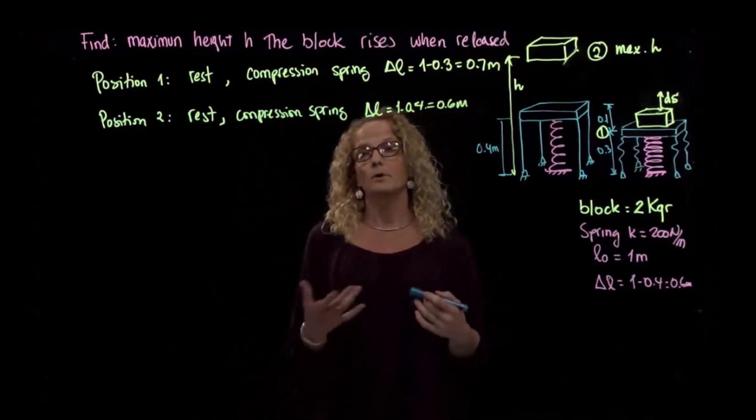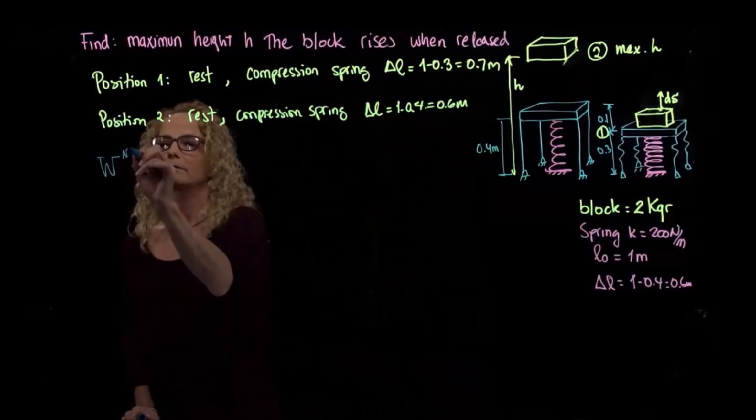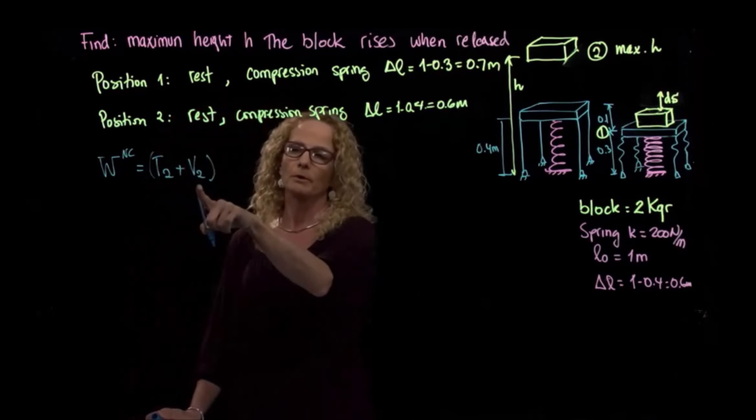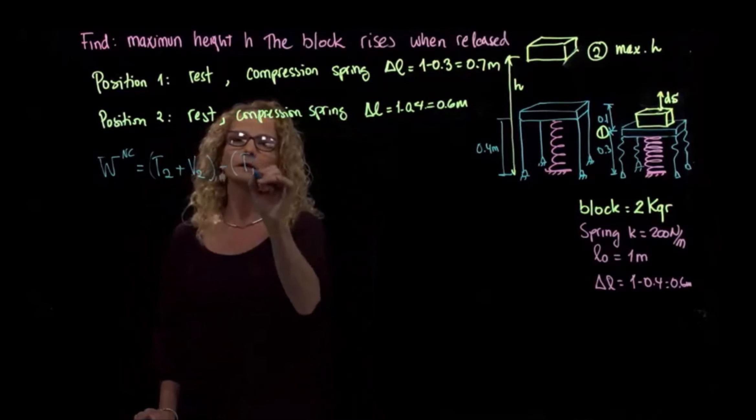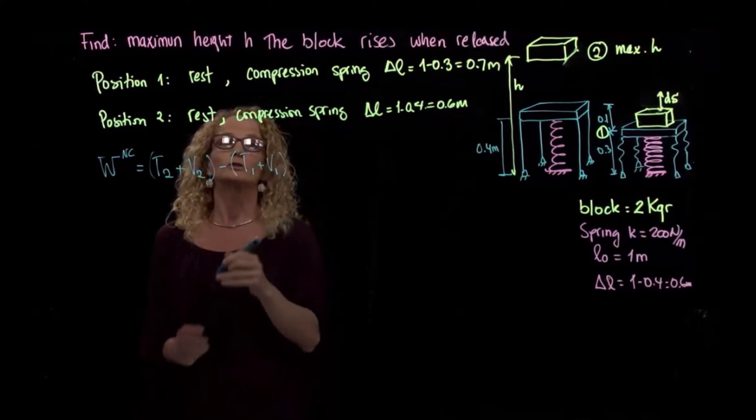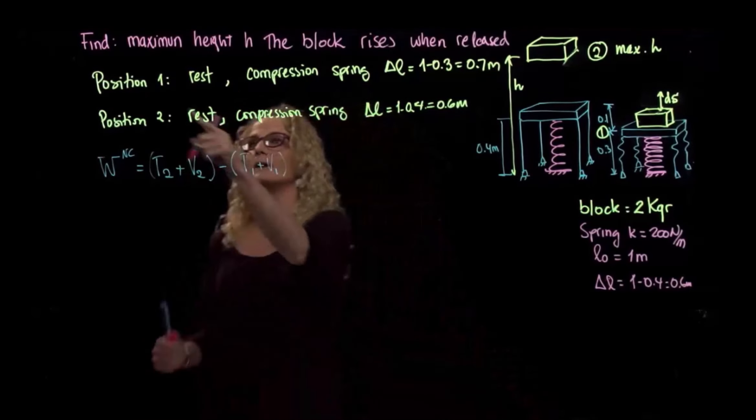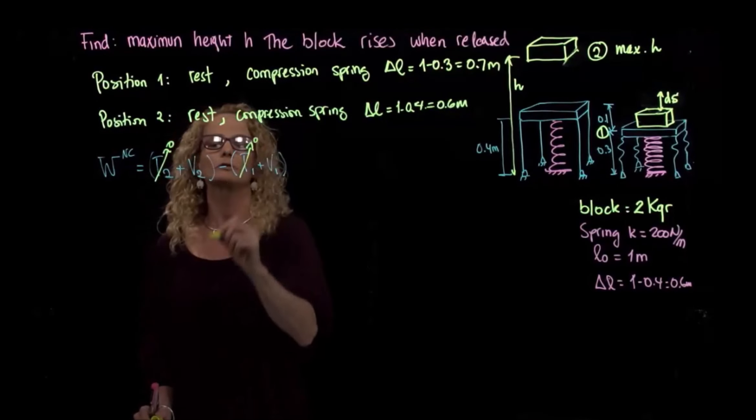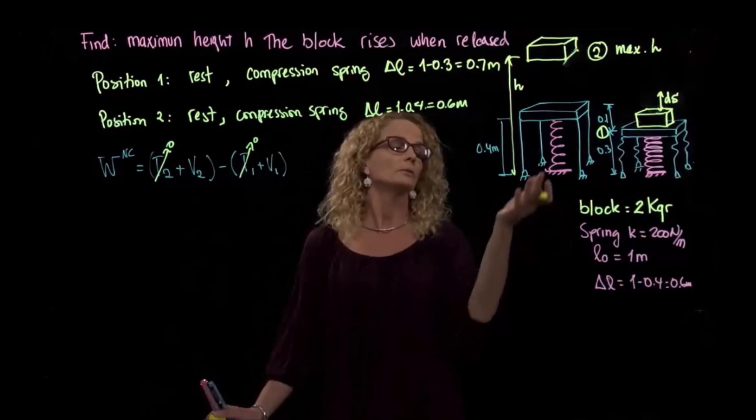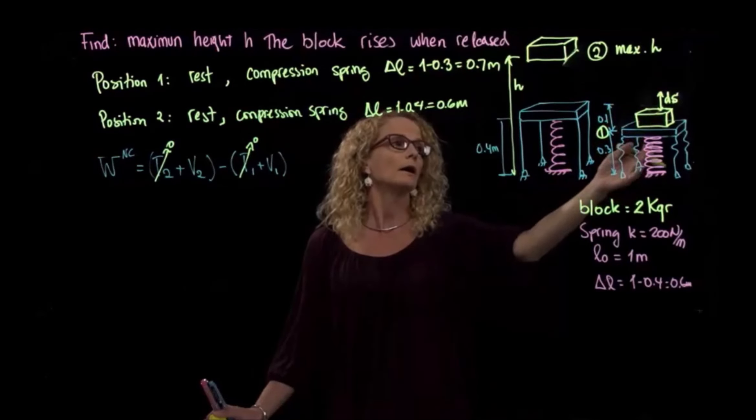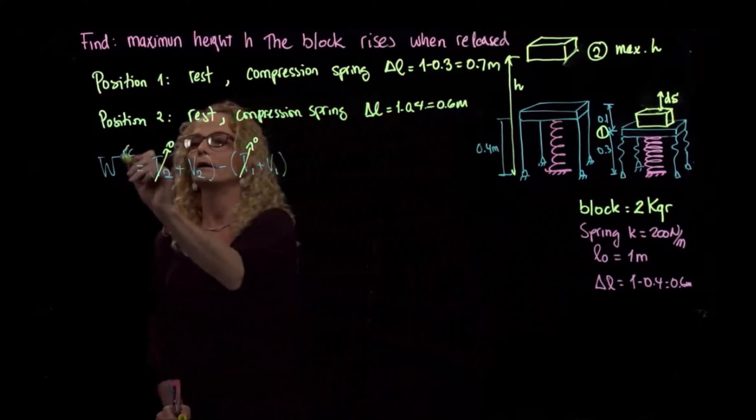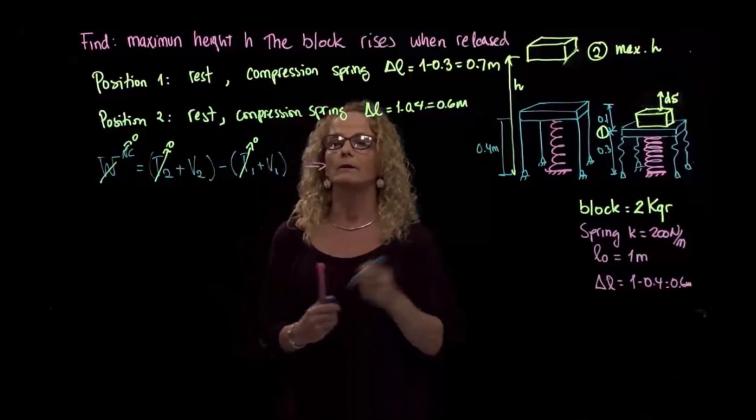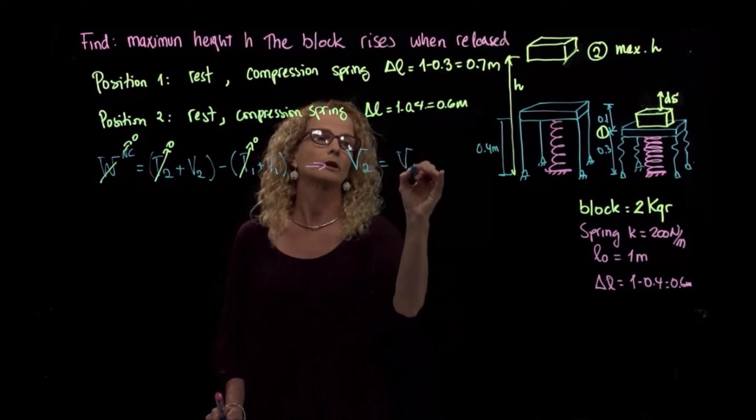We want to apply our principle of work and energy. The way I write it is: non-conservative forces are equal to all changes in energy, which is kinetic energy plus potential energy minus kinetic energy plus potential energy in the first position. As you see, in the first position we have rest, so this here is zero, and in the second position too. And we don't have any non-conservative forces because we only have the weight of the block and the force of the spring. So non-conservative forces equals zero. At the end, we just have that the potential energy in position two equals potential energy in position one.